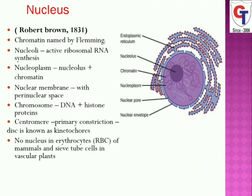The shape of the nucleus is mostly spherical. It can also be ovoid or elongated. Sometimes it is disc-shaped. In white blood cells (WBCs) it is bilobed or multilobed. The shape varies from cell to cell.